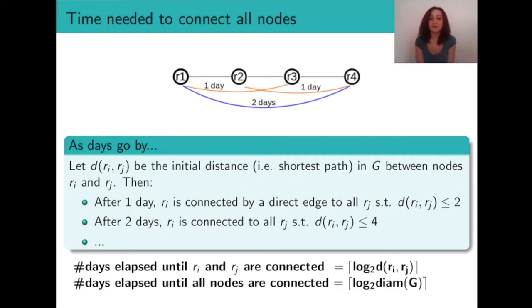In order to compute the number of days elapsed needed to connect two nodes ri and rj, we're just going to take the base two logarithm of their distance, of course rounded up to the next integer. And if we want to compute this for the whole graph, we're going to take the same log₂ but this time apply it to the graph diameter, that is the largest pairwise distance in the graph.